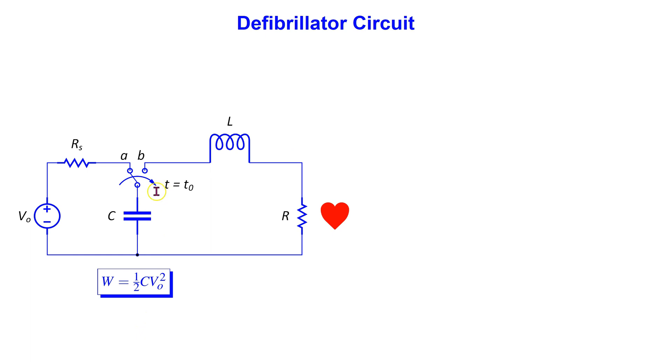When the switch moves to position B, the capacitor discharges in this RLC circuit. The inductor plays a key role here. The basic property of an inductor is that it does not allow instantaneous change in current, thus the inductor regulates the rate of discharge of the capacitor.